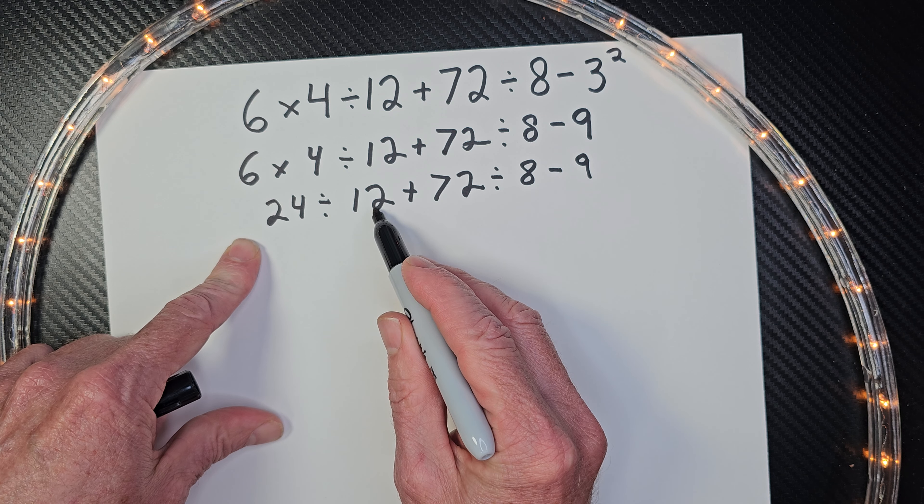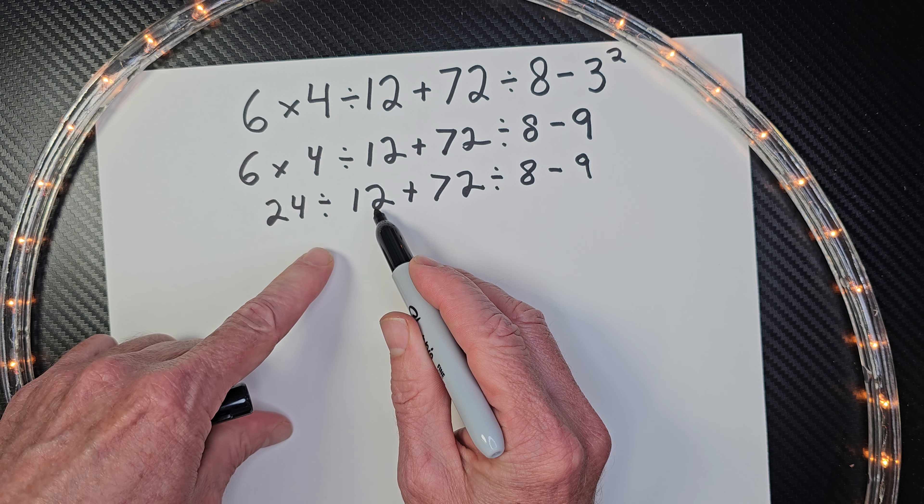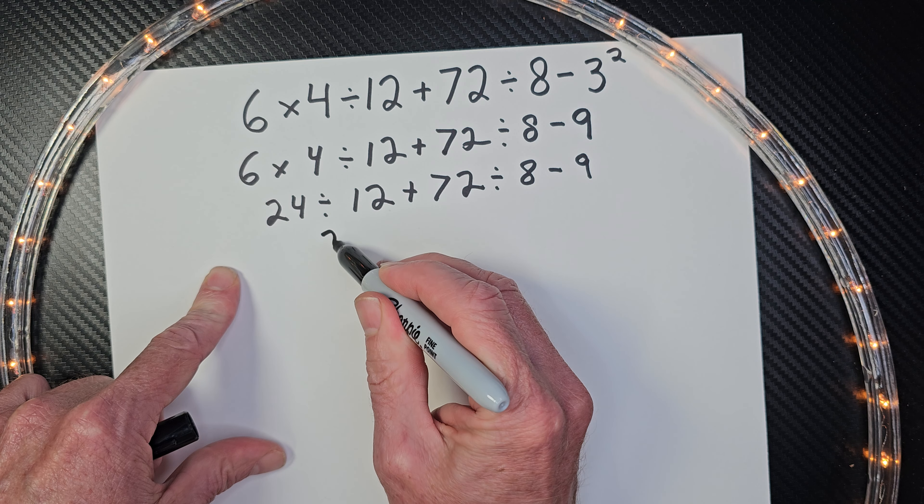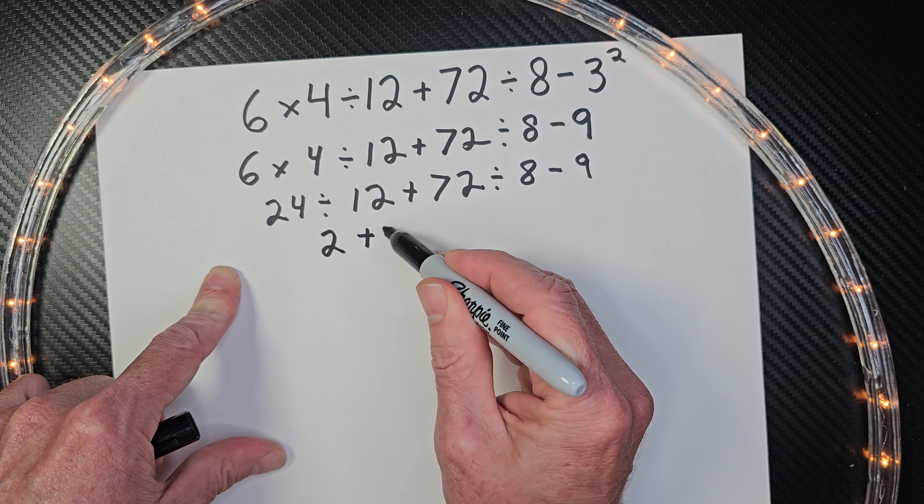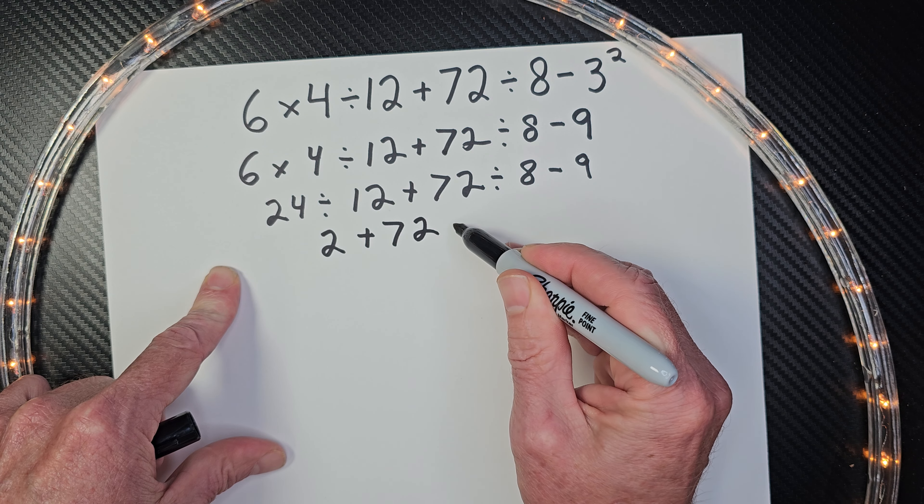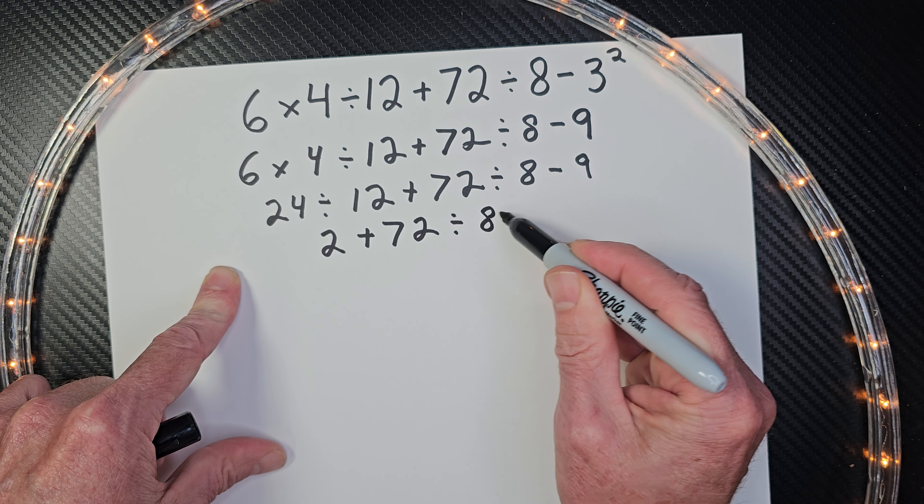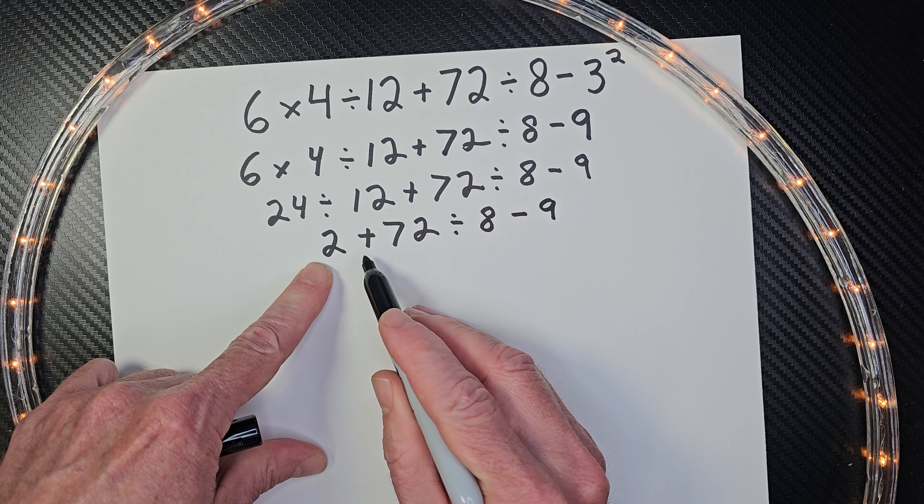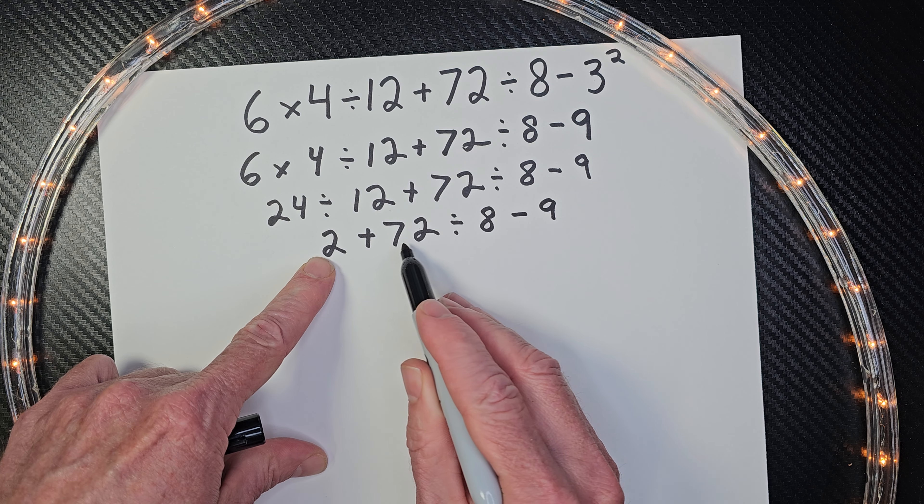I'm just going to do it step by step. You might take some shortcuts in here, but that's okay. So then I have 24 divided by 12, and that would be 2. So 2 times 12 would be 24. So I'm going to put 2 right here plus 72 divided by 8 minus 9.